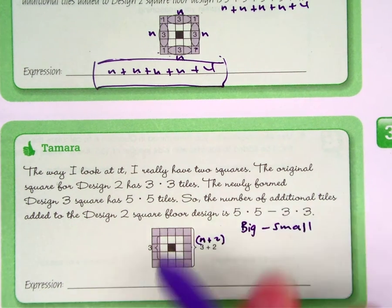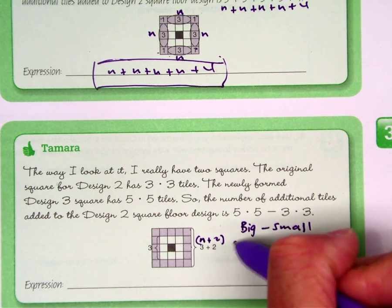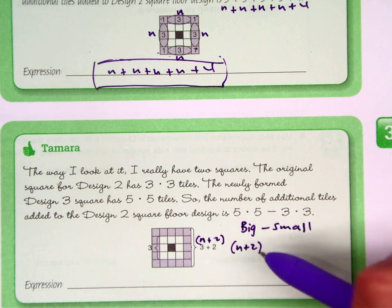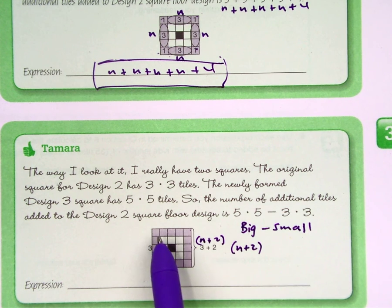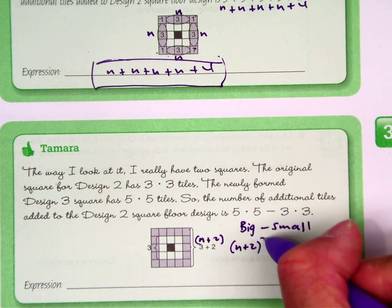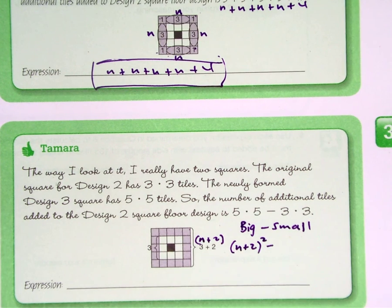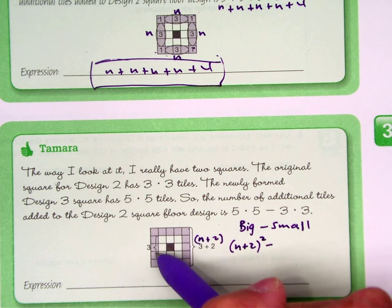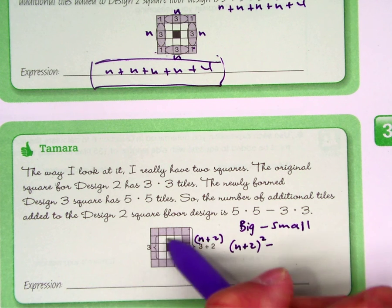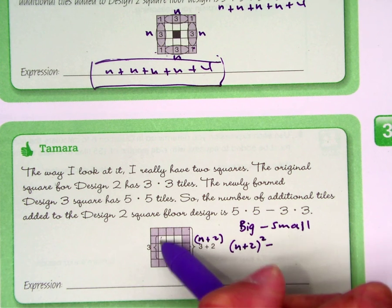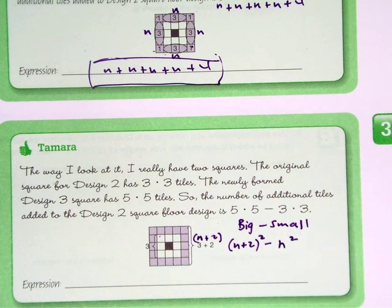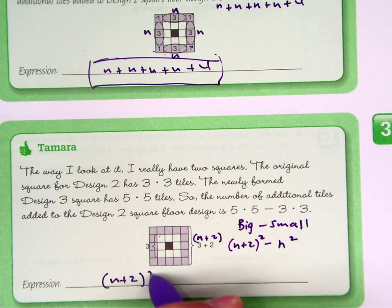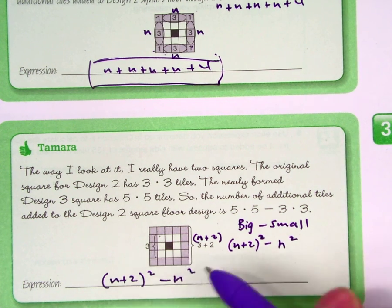Well the big square is n plus 2. And the area of a square is just multiplying its side lengths. So that would be n plus 2 squared. Now the small one in here, if you're just kind of taking that away, that would be n and n. So that would be n squared. So this expression is n plus 2 squared minus n squared.